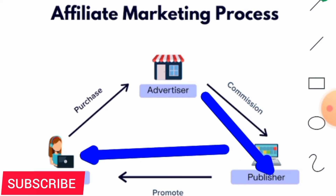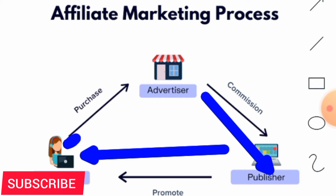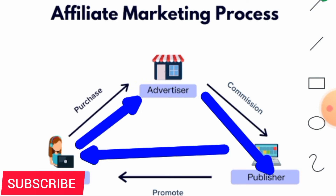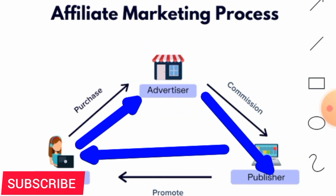You, the affiliate or publisher, will market the advertiser's products to the customer. You'll have a target audience and promote products from the advertiser to the customer. When the customer clicks on your link and buys from the advertiser, you the publisher will earn a commission. You are earning a commission from this customer's purchase through your link. It is that simple.